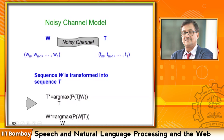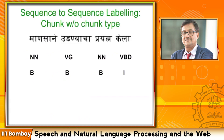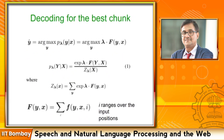Discriminative models that deal with conditional probabilities have an elegant mechanism for handling features. The probability of Y given X is modeled by an exponential expression: e to the power lambda·f(y,x), where lambda·f(y,x) is a sum of weighted features. You take features like the '-shun' feature, the '-ly' feature, the length feature, give them different weightages, aggregate them, pass through the exponential expression divided by a normalizing factor.